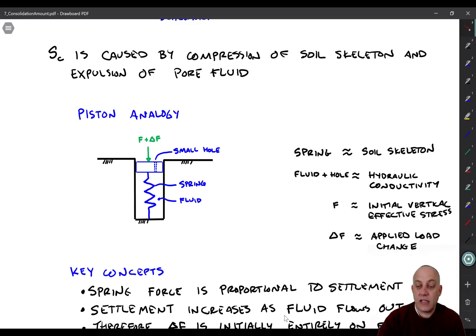So when we extend this analogy to soil, the spring is analogous to the soil skeleton compressibility. So when you apply a load, how much volume change is there in the soil skeleton? The fluid and the hole, or the fluid would have some sort of viscosity to it. The size of the hole would control the flow rate, you know, in consideration of that viscosity. So that's like the hydraulic conductivity of the soil. The initial force that was on the spring is analogous to the initial vertical effective stress. So how much vertical effective stress is there on the soil? And then delta F is analogous to some kind of applied loading on the soil.